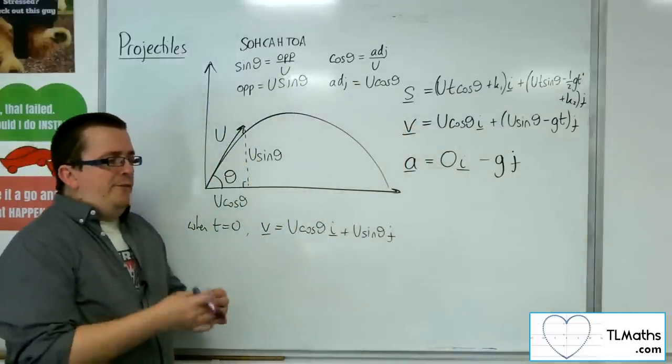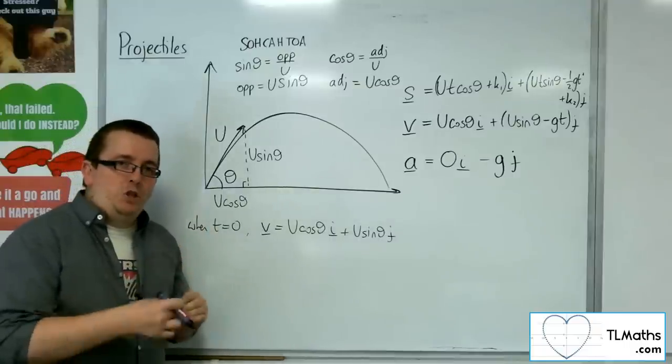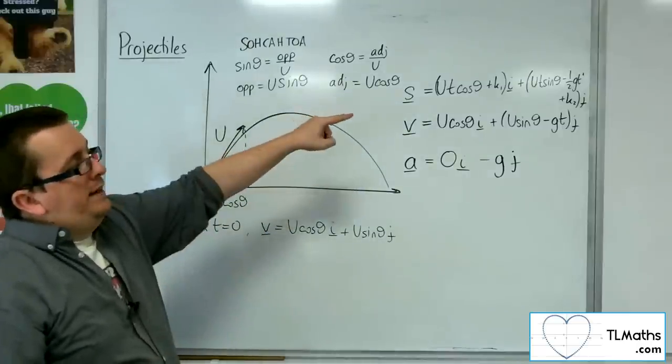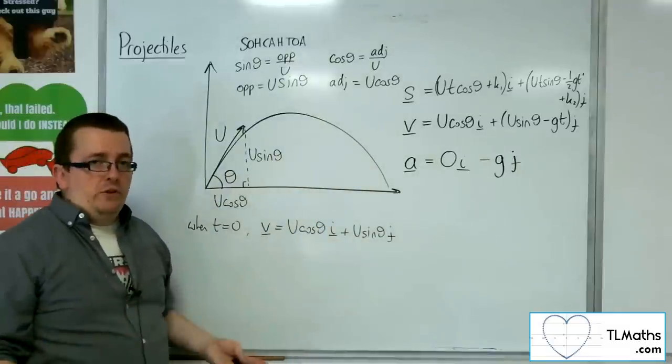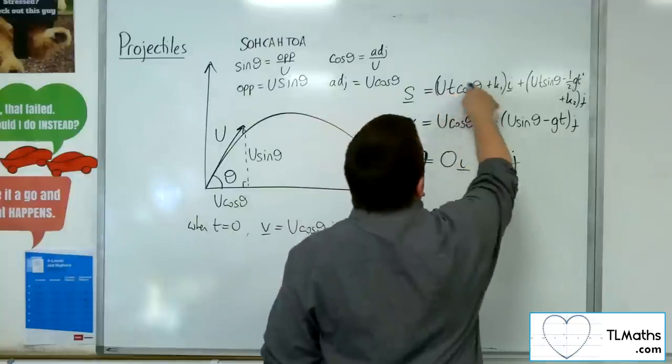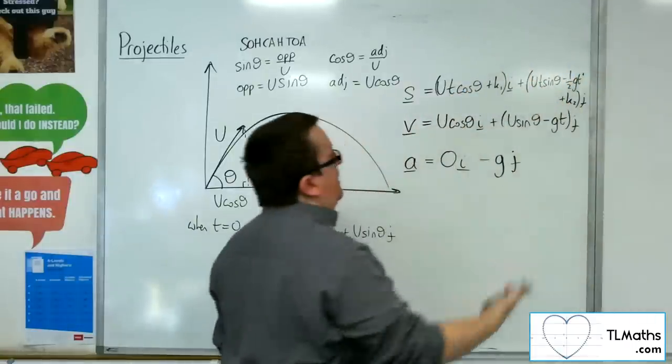Now, if I am projecting my particle initially at the origin, then the k1 and k2 will be 0. Because when t is 0, I get 0 there, 0 there, 0 there. And so, k1 and k2 would have to be 0.